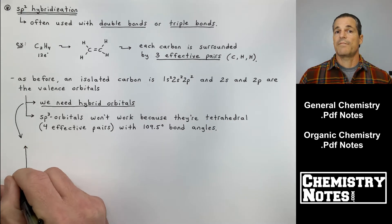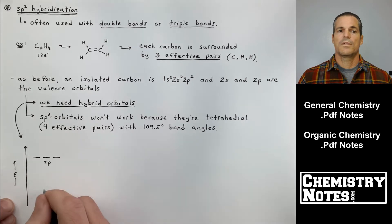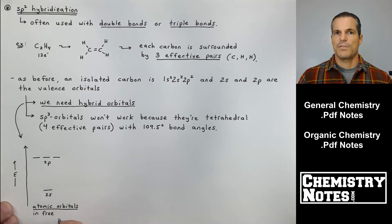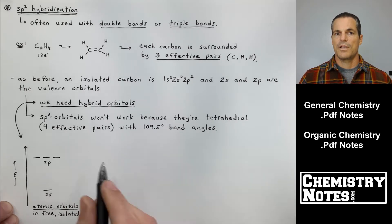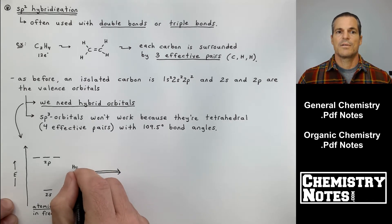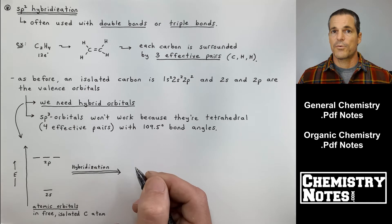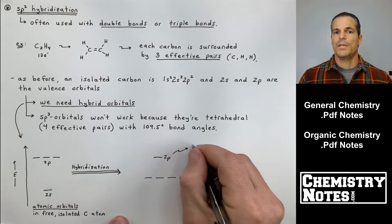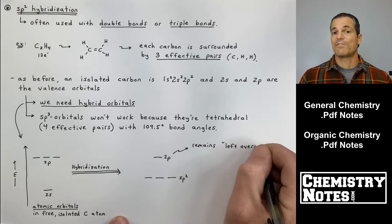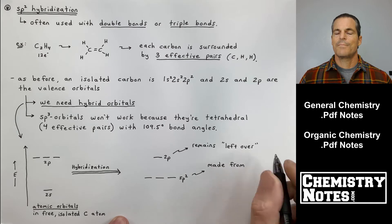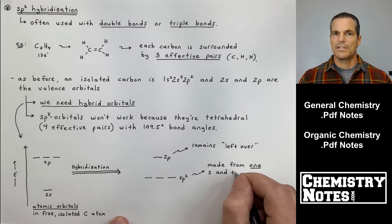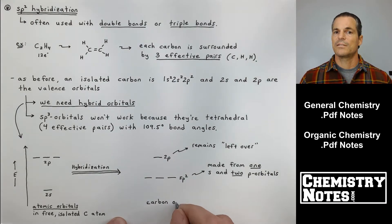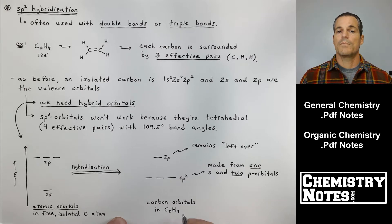So what are we going to do? We've got to take our 2s atomic orbital and our three 2p atomic orbitals. This energy diagram column looks just like it did for sp3 because it's an isolated carbon atom, except the way I hybridize is different — I don't want to use the s and all three p's to make sp3 hybrid orbitals; I just want to use two. So I've got one 2p atomic orbital left over that I don't use. I've taken the 2s and two of the 2p orbitals and hybridized them together to make three equivalent sp2 hybrid orbitals, made from 1s and 2p atomic orbitals.